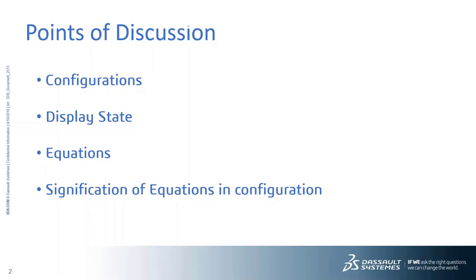In part documents, configurations allow you to create families of parts with different dimensions, features, and properties including custom properties. In assembly documents, configurations allow you to simplify versions of the design by suppressing some of the components.